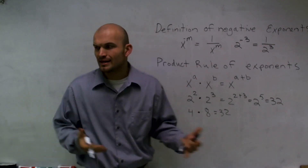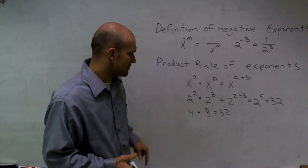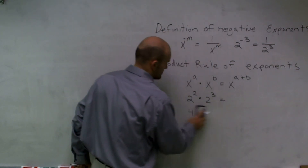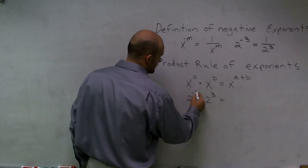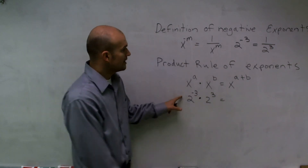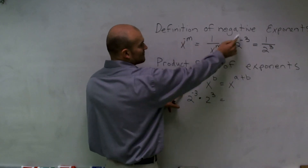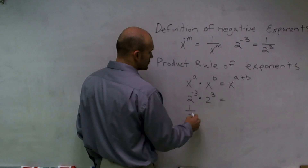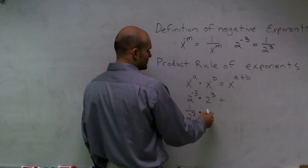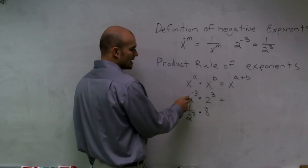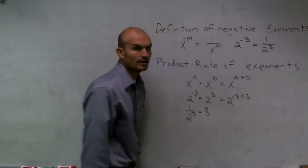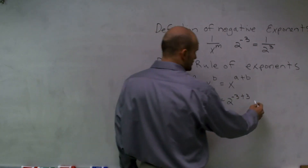Why does that make sense? Let's use the product property. If I do 2 to the negative third power times 2 to the third power, by the definition of negative exponents that's 1 over 2 to the third power, times 2 to the third power, which is 8. Using the product rule, I get 2 to the negative 3 plus 3, which equals 2 to the 0.